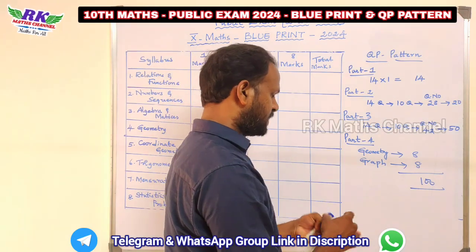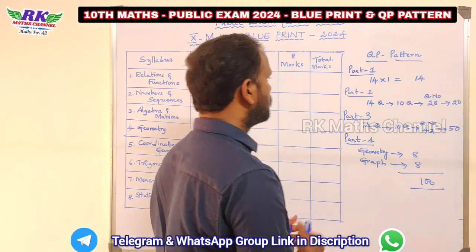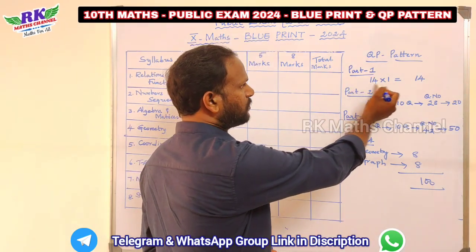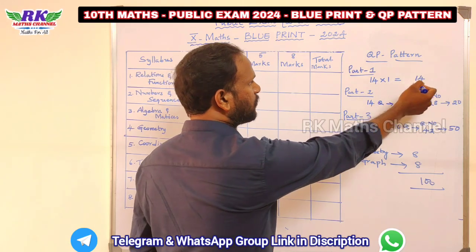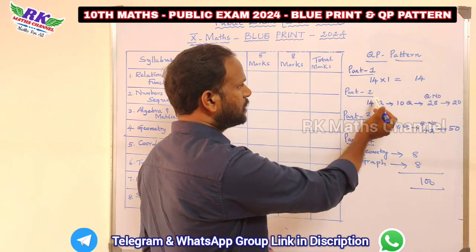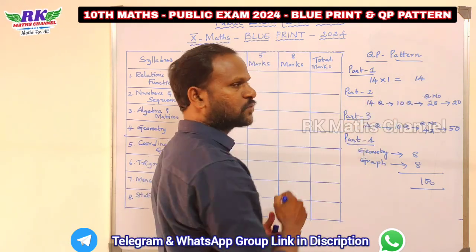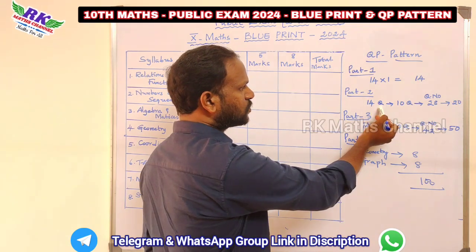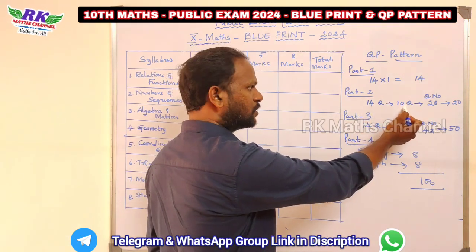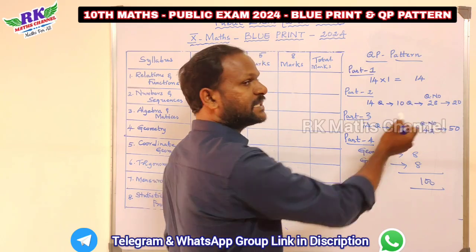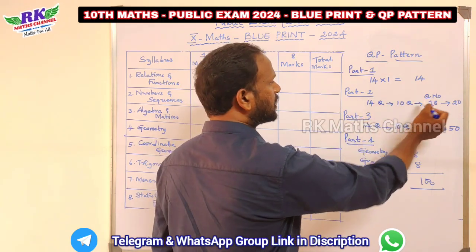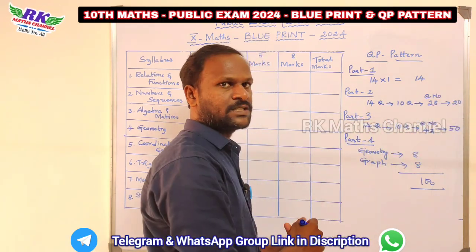The first question follows the pattern. Part 1 is the 1-mark questions, with 14 marks total. Part 2 is the 2-mark questions — 14 questions with 10 to answer. Question 28 is the compulsory question. Total for Part 2 is 20 marks.